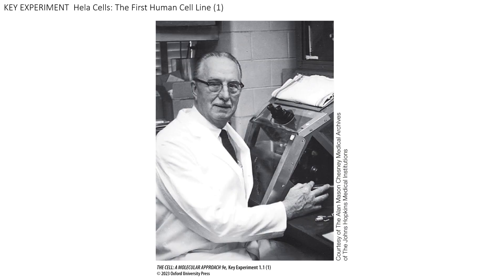George Otto Gey is attributed as the first person to achieve sustainable growth of a human cell line. He took cells from Henrietta Lacks, a woman with cervical cancer, and sustained a distributed cell line using a mixture of human blood, chicken blood, and umbilical tissue. This HeLa cell line has been going strong since the 1940s or 50s — about 60 years of continuous culture. The genome present today is nearly identical to what it was 60 years ago, making it an immortal cell line — most likely due to specific genes in Henrietta Lacks' genome that keep the tumor cells continuously growing.